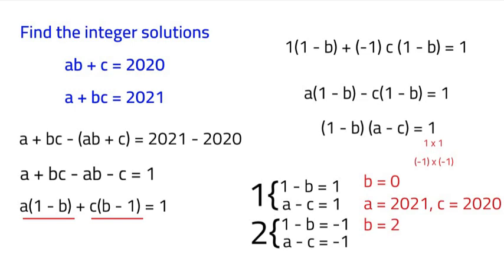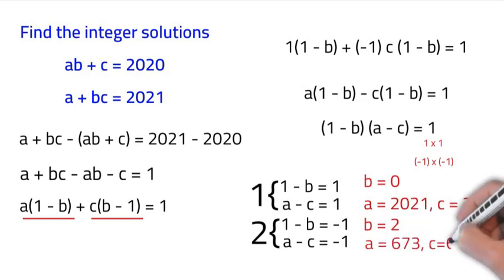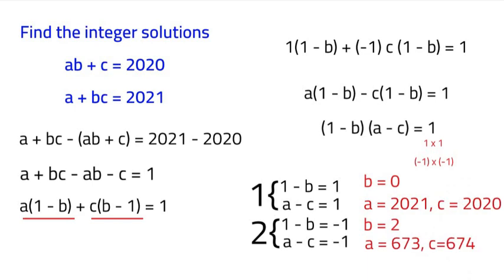And it would be A plus 2C equals 2021. And if we solve that, we'd get A is equal to 673, and C is equal to 674. And that works perfectly, because 673 minus 674 is equal to negative 1.